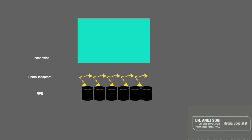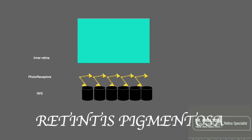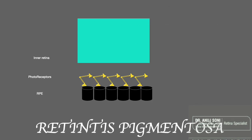RP, or retinitis pigmentosa, is a rod-cone degenerative disorder. A hallmark of RP is bony spicules. There is loss of photoreceptors in RP, followed by outer retinal loss, and bony spicules are commonly found in areas of photoreceptor loss.